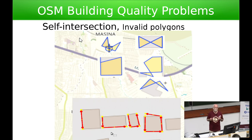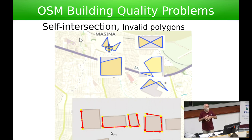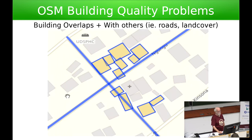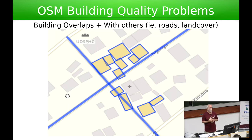Compared to most tools, the objective here is not to look at one building at a time but to get an overview. When you manage a big project you need to know the data quality situation — you need some metrics. These are examples taken from real data, showing the type of output the tool can produce.